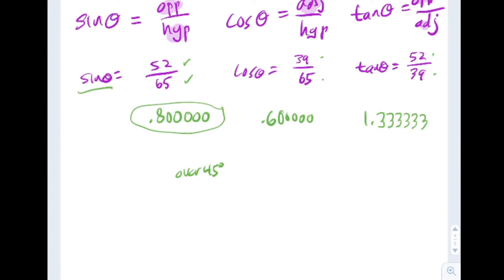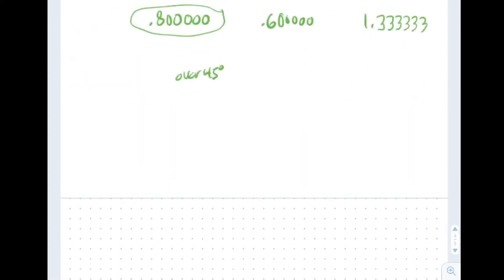In the old days, big trig tables hung on classroom walls — if you ever find one at a yard sale, grab it! That covers today's material. You're ready to try your homework — it's all the same thing: identifying sine, cosine, and tangent ratios. Next time we'll actually use trig tables to solve right triangles.